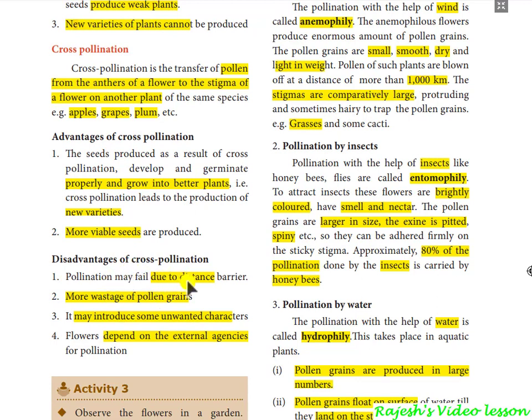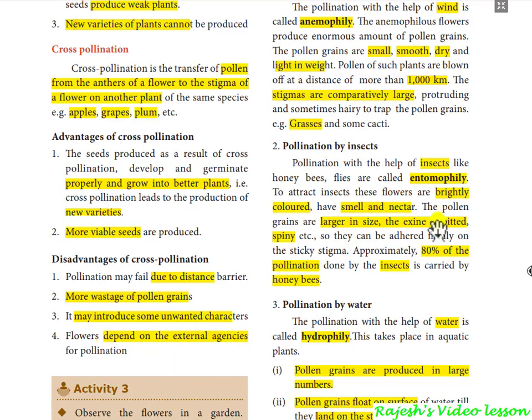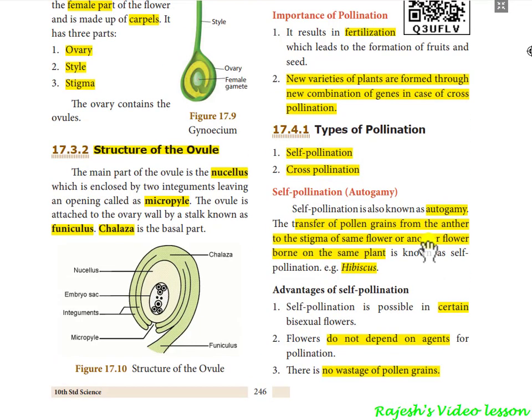Disadvantages of cross-pollination: pollen may fail to reach due to the barrier of distance. If one plant is far from another, pollination cannot happen. There is wastage of pollen since large numbers must be produced — most will be wasted. Sometimes unwanted characters may be introduced, and it always depends upon external agencies.